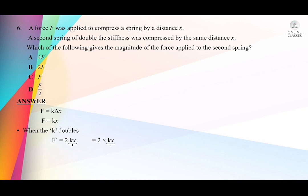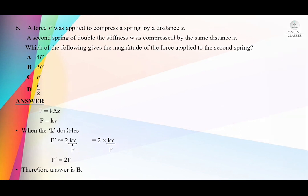When k doubles, the new force F' = 2kx. But the product kx equals the original force F. So substituting, F' = 2F. That means the new force will be double the previous one. Therefore the answer is B.